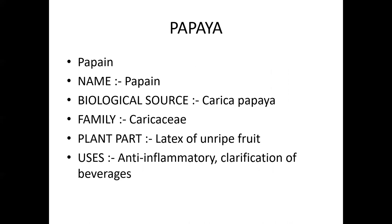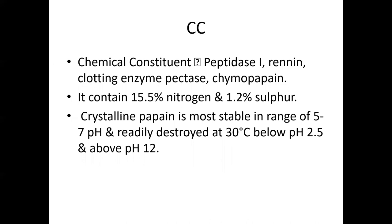Papain is one of the anti-inflammatory agents and is used for clarification of beverages. Papain mainly contains enzymes: peptidase I, rennin, pectase, chymopapain, and papain. Papain and chymopapain are the two main constituents — they contain 15.5% nitrogen and 1.2% sulfur. Papain is a crystalline compound, stable at pH 5 to 7, and may be destroyed above 30°C.